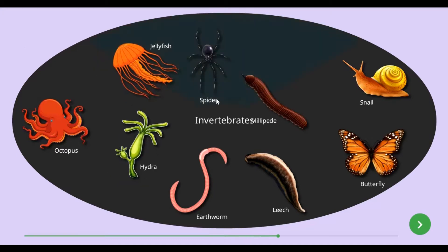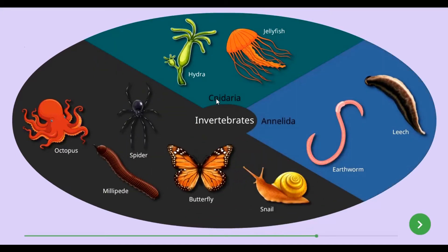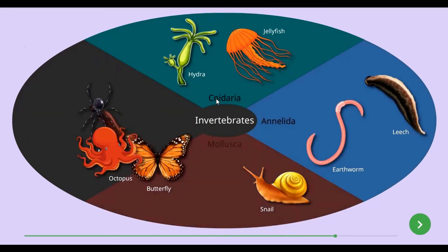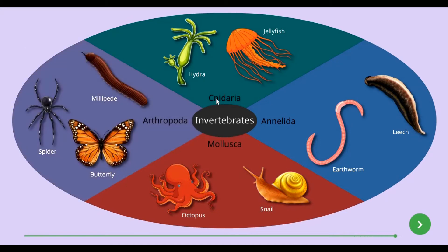The four main invertebrate groups are Cnidaria, Annelida, Mollusca, and Arthropoda.